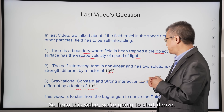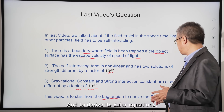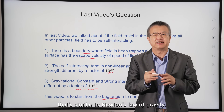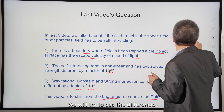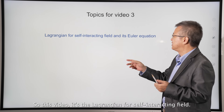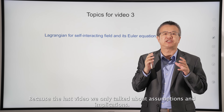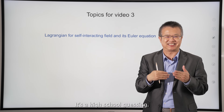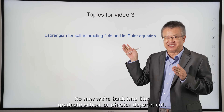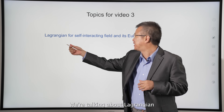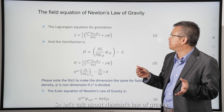From this video we're going to start from the Lagrangian and derive its Euler equations, similar to Newton's law of gravity. We'll try to see the difference. This video is about the Lagrangian for the self-interacting field. In the last video we only talked about assumptions and implications — that was a high-level guess. Now we're back in graduate school physics, talking about Lagrangians and Euler equations.